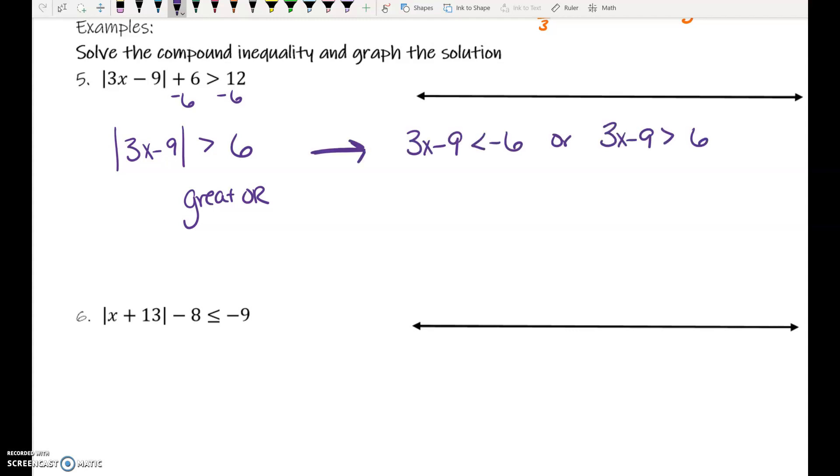The first inequality, you flip it to less than and switch to negative 6. So, 3x minus 9 is less than negative 6, or the other one is unchanged. 3x minus 9 is greater than 6. You would solve both of those and graph both of them. Feel okay about that one?